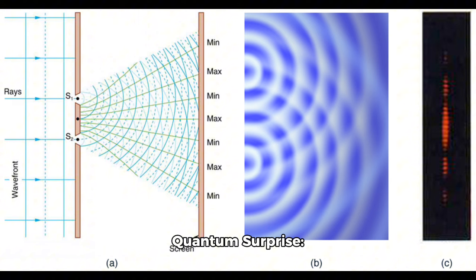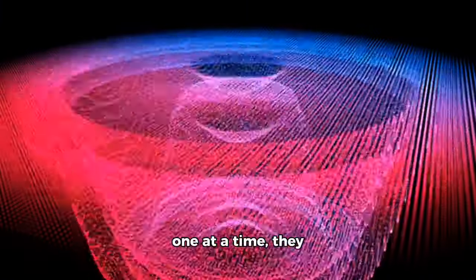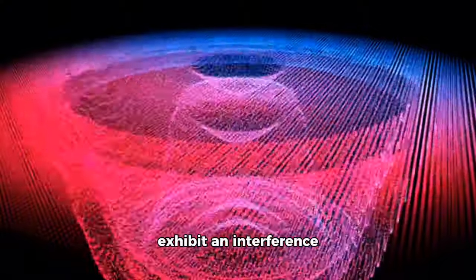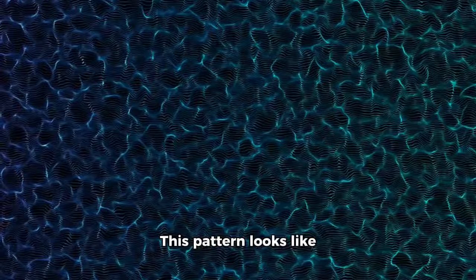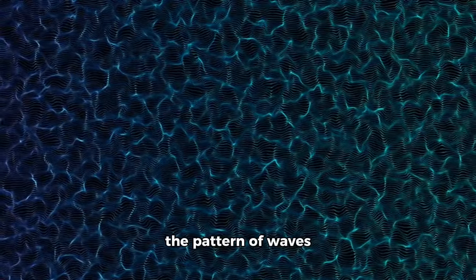Quantum surprise! In the double-slit experiment, something very different happens. When particles are fired one at a time, they exhibit an interference pattern on the screen. This pattern looks like the pattern of waves interfering with each other, not particles.